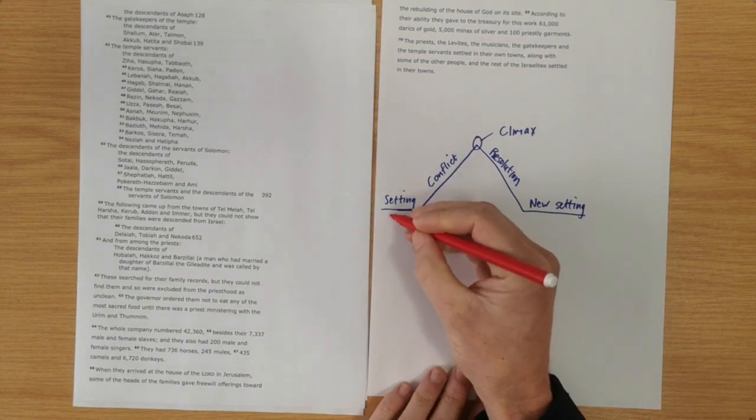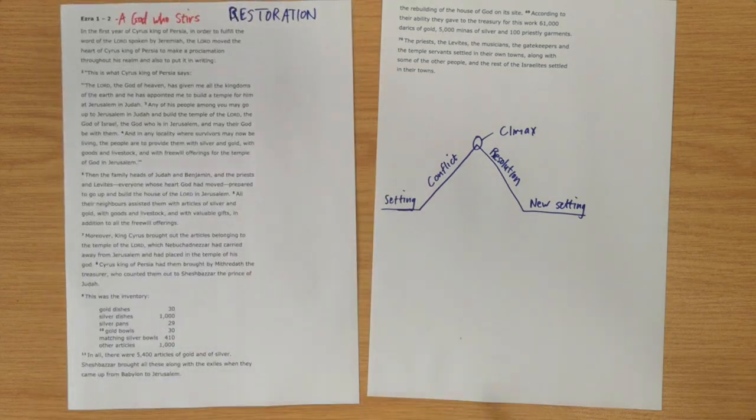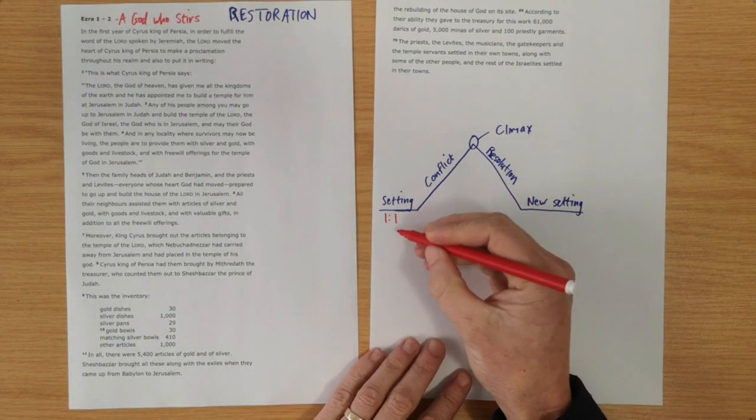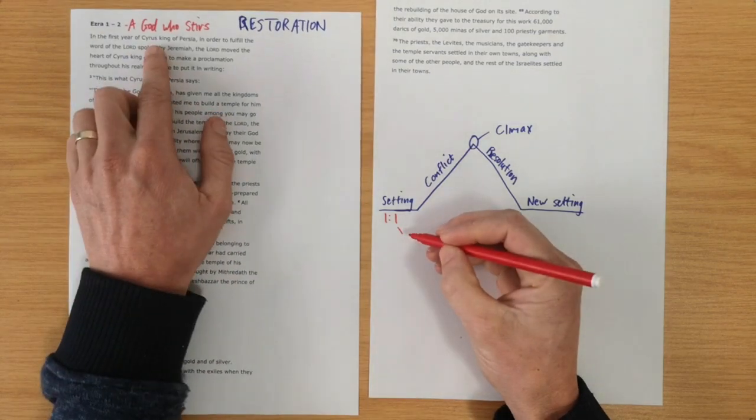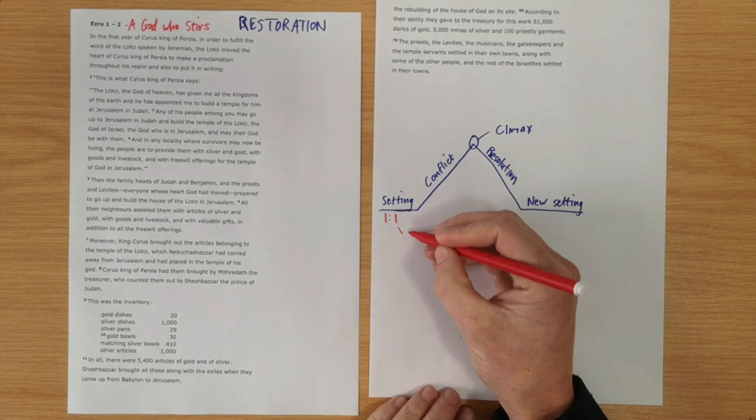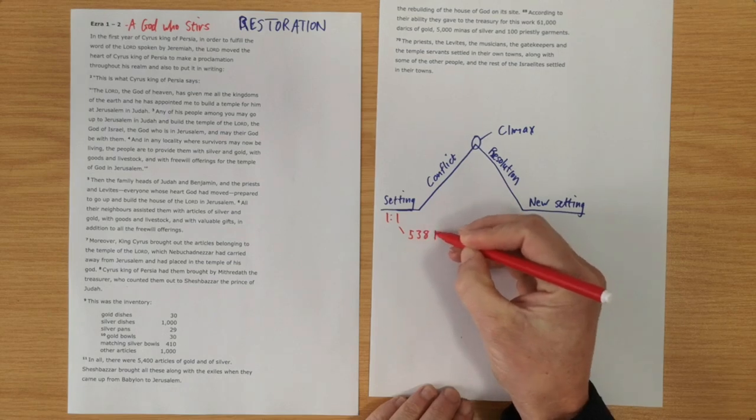In this story, the setting is given in chapter 1, chapter 1 verse 1, where we see, we're told that in the first year that Cyrus was king of Persia. Now, if you go and do a little bit of digging, you'll see that this is the year 538 BC.